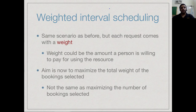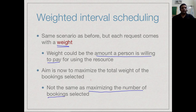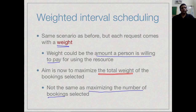Suppose we change the interval scheduling problem very slightly: we associate with each request a weight, for example the amount somebody is willing to pay. We have an auditorium rented out for performances, and people are willing to pay to use it — only one person can use it at a time. Our earlier goal was to maximize the number of bookings, but now the criterion is how much each person is willing to pay. So our aim is to maximize the total weight — the total revenue from our allocation, not the number of bookings.